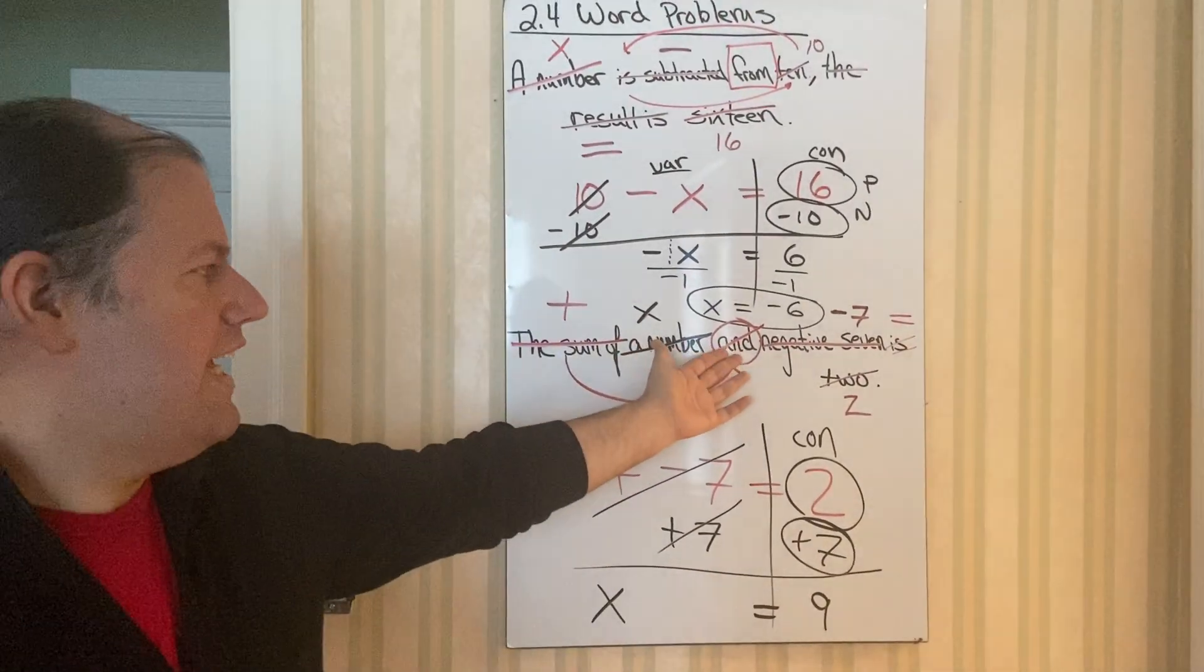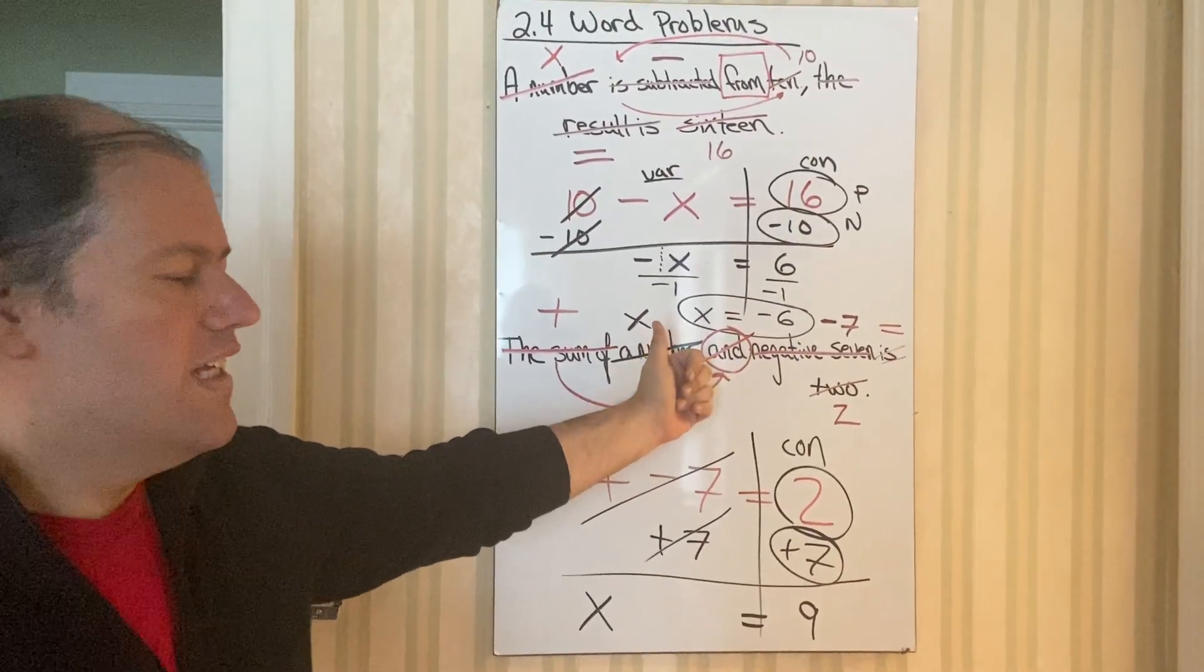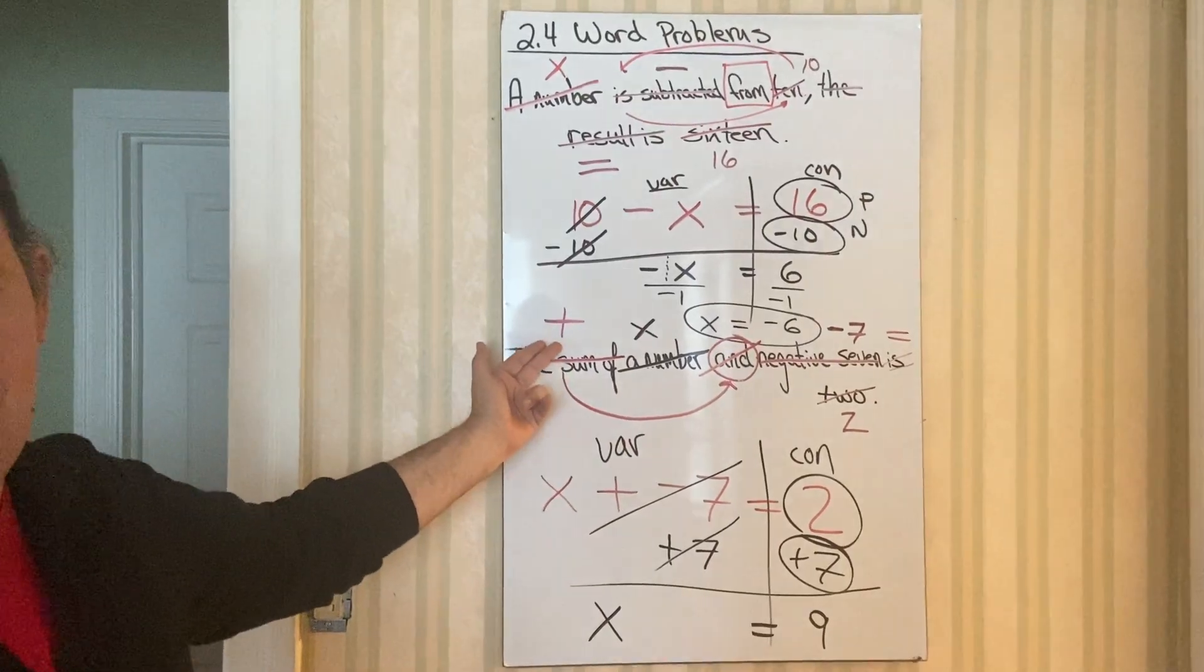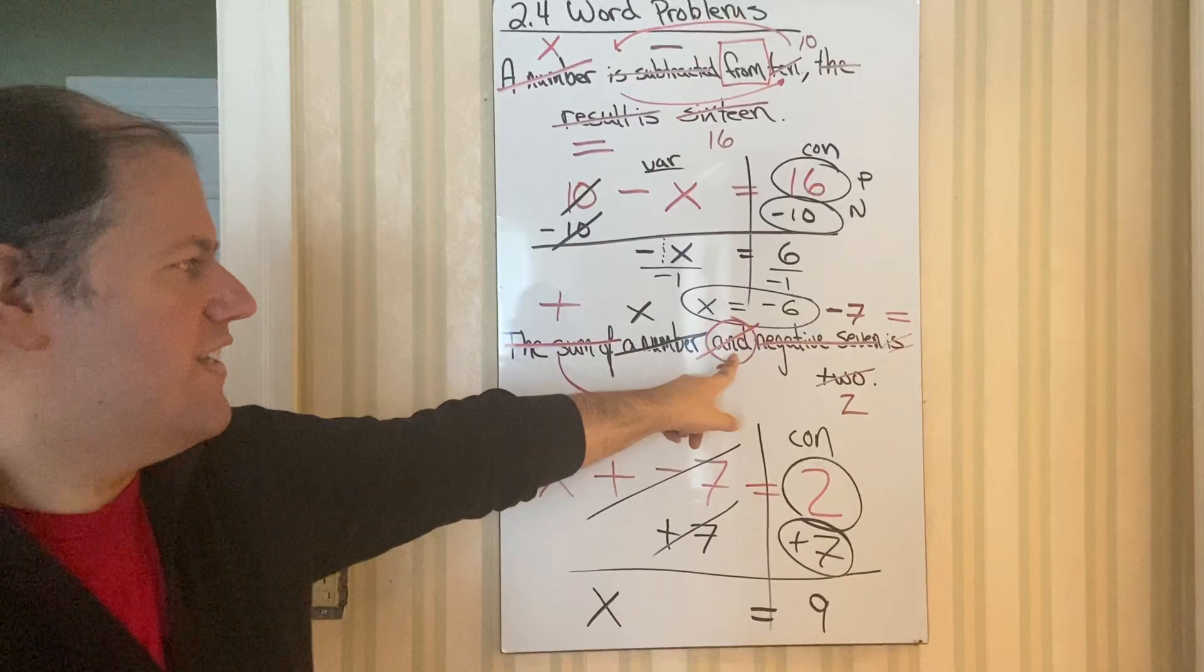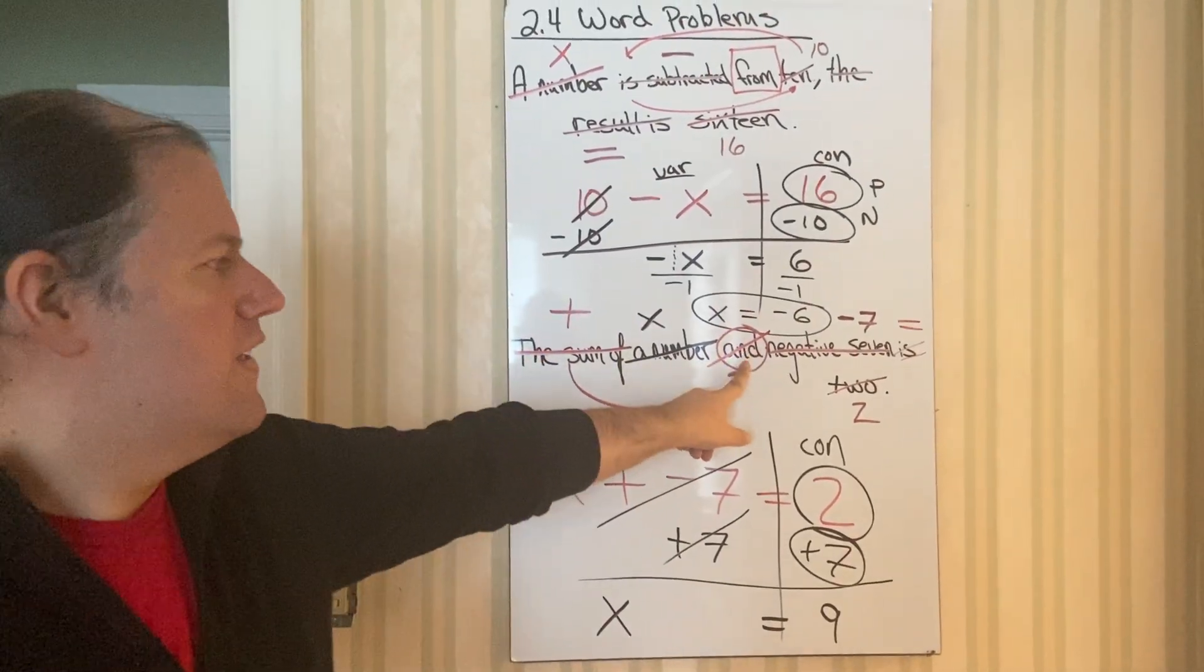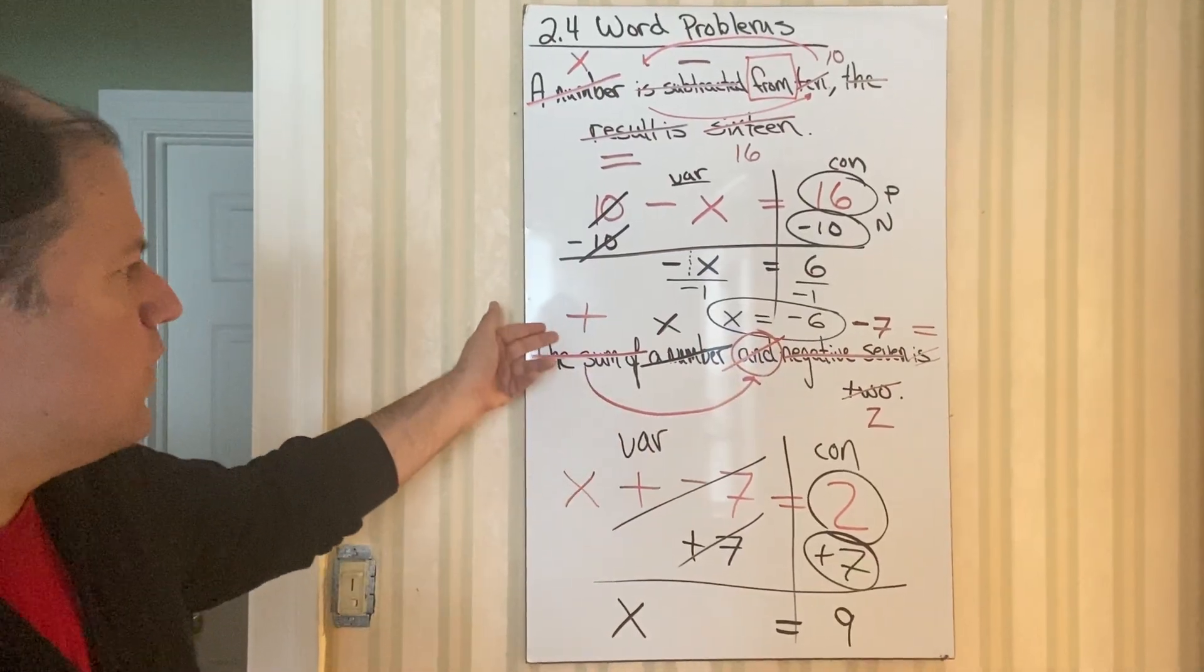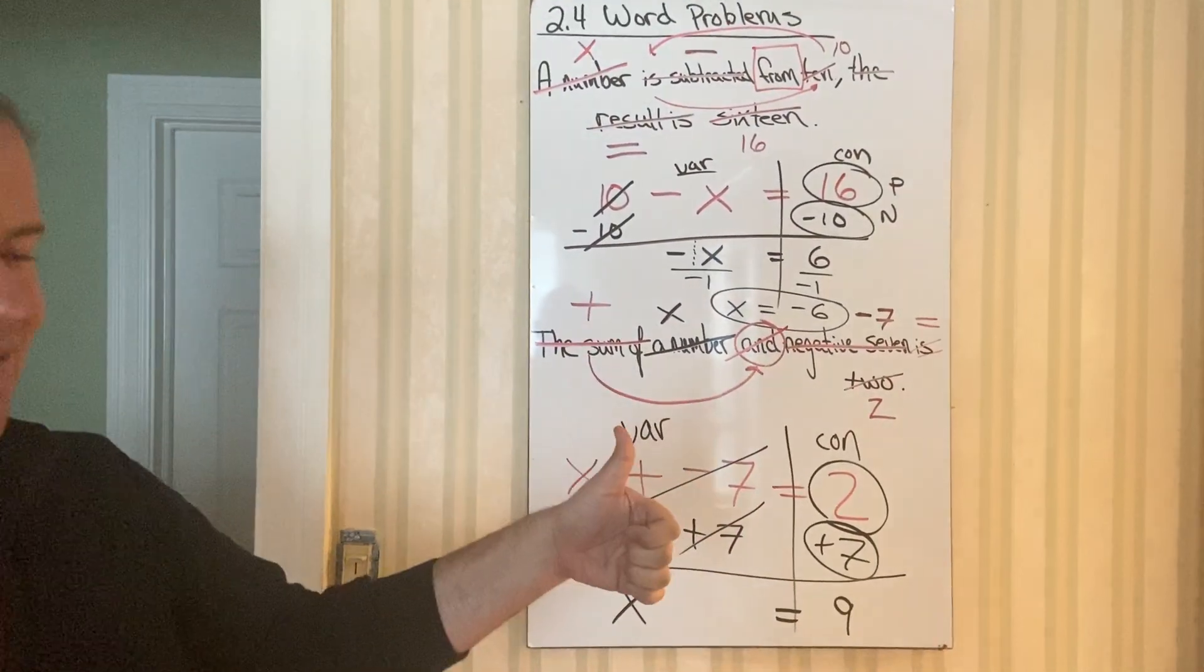And like I said, we finally got an and. And does not automatically mean addition. It is just a placeholder for whatever operation that's in front of it. So again, if this said difference, you put a minus sign here. If this said product, you're going to put a multiplication symbol. If this says quotient, you put a division symbol here.